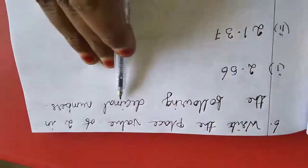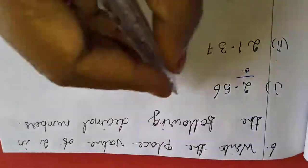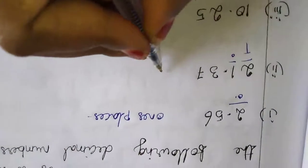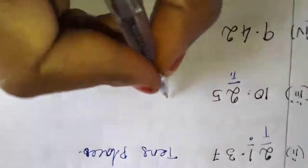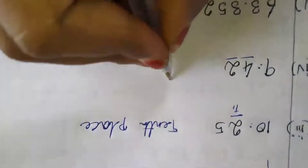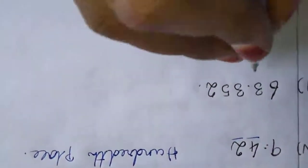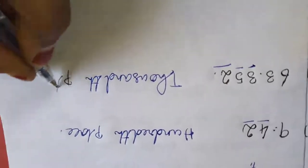Now I am moving to the 6th sum: write the place value of 2 in the following decimal numbers. Here 2 is before the dot, so this is 1's place — 1's place. Second: 2 is in the 10th place. After the dot, 2 is in the 10th place. Further: dot after only — 10th, 100th. So 100th place. Then 10th, 100th, 1000th — 1000th place.